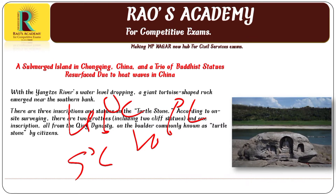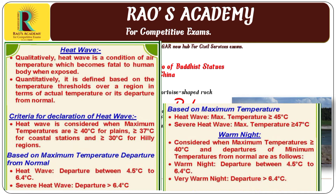Conclusively, a heat wave is a period of abnormally high temperature, more than the normal maximum temperature, that occurs during the summer season in the northwestern part of India. Heat waves typically occur between March and June, and in some rare cases extend till July. The extreme temperature and resultant atmospheric conditions adversely affect people, causing physiological stress and sometimes even death. I am also attaching the image of IMD's criteria for heat waves — you can take a screenshot from here.